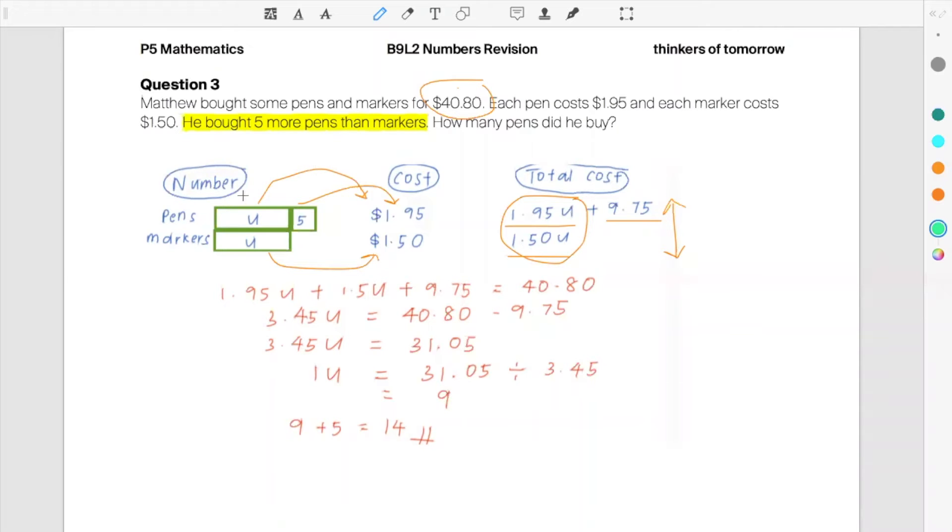What is the total cost of the pens? 1U times 1.95, 1.95U. 5 times 1.95, 9.75. Everything adds up to be $40.80. So 1.95U is equal to $40.80. 3.45U is equal to $40.80 minus $9.75.